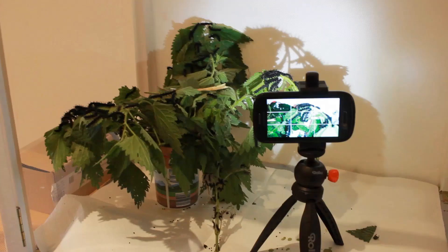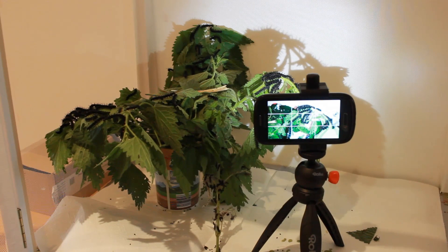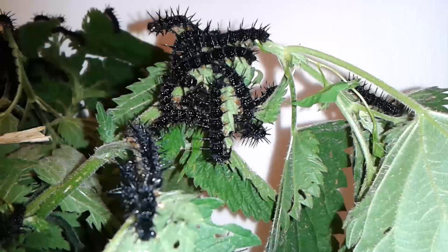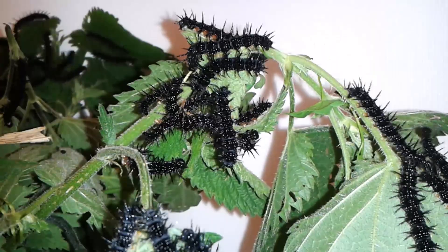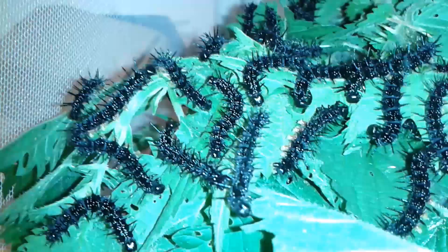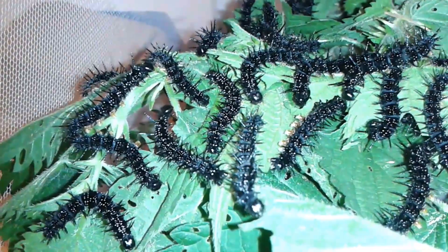We started by collecting some caterpillars and put them together with a stinging nettle, along which we found the caterpillar, into a cage. Here you see a little time-lapse of the caterpillars eating away happily at the plant material. We had to replace the plant material approximately two times every day. Here you can see them again in real time, and you can now see how they were actually eating holes into the leaves.